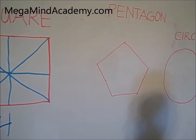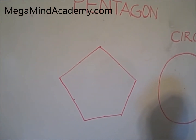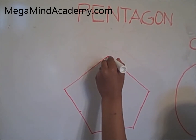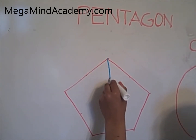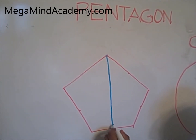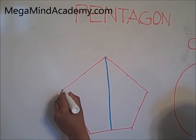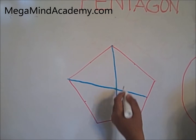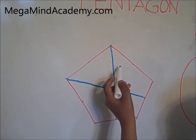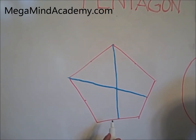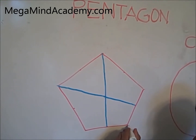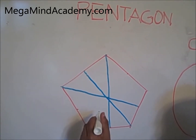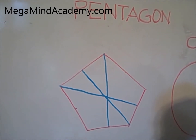The next one is a pentagon. This is one of the lines of symmetry. This is another line of symmetry — it divides the figure into two equal halves. This is another line of symmetry — it divided these two equally.